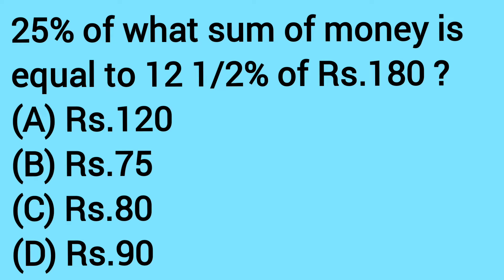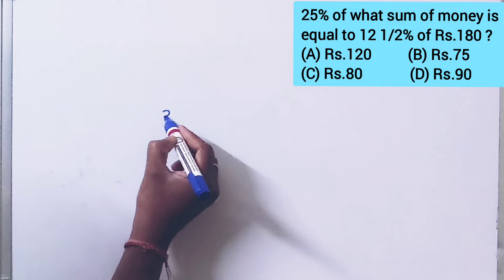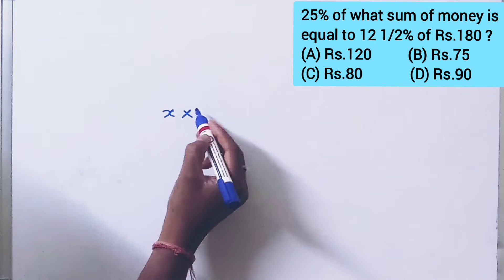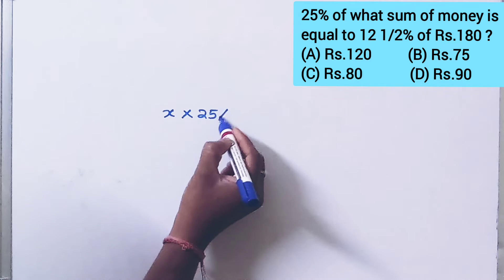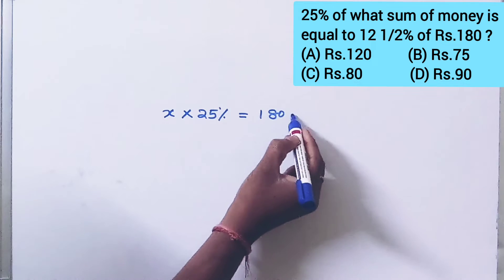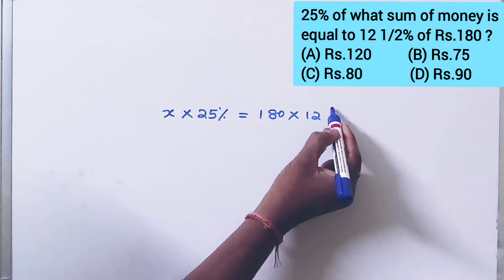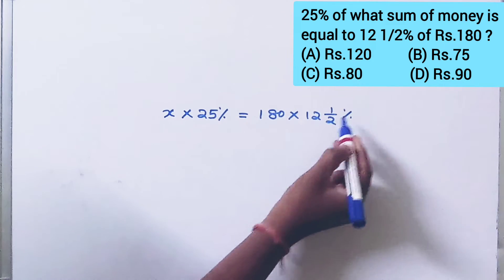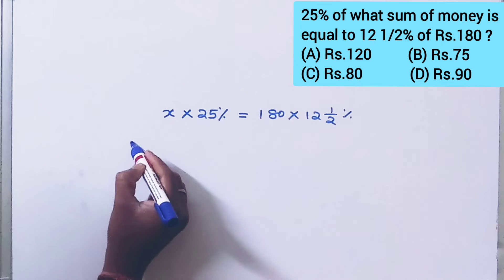25% of what sum of money is equal to 12½% of Rs. 180? We need to find 25 percent of how much money equals 12 percent of Rs. 180. Let the amount be X. Then: X into 25% is equal to 180 into 12½%.